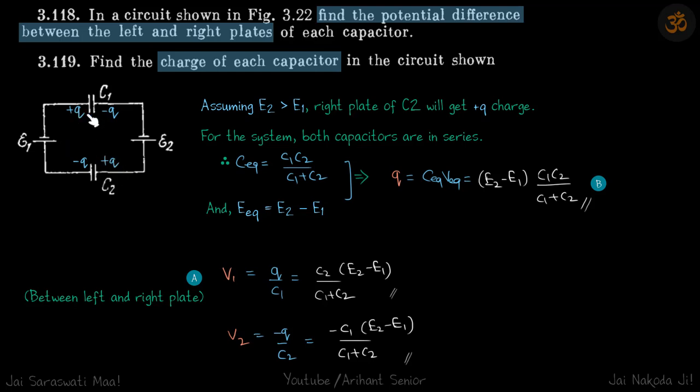Let's assume this is plus Q, this is minus Q, this is plus Q, and this is minus Q. We're assuming E2 is greater than E1, so the right plate of C2 will get plus Q charge. These are all variables so it doesn't matter, but we have to start somewhere.